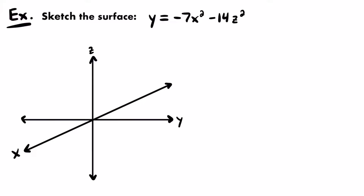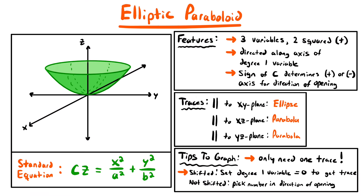Which one it is depends on the structure of the rest of the equation. For an elliptic paraboloid, both squared variable terms should be positive. For a hyperbolic paraboloid, one should be negative. But in our equation, both squared variable terms are negative. What we can do is multiply both sides by -1, giving us: -y = 7x² + 14z². Now we have an equation in the form of an elliptic paraboloid — both squared variable terms are positive and we have a negative degree-1 variable.